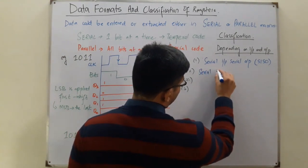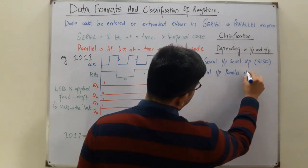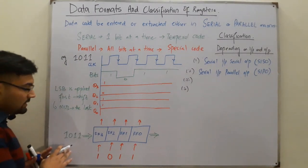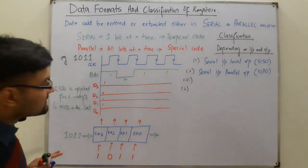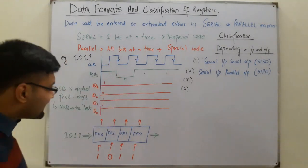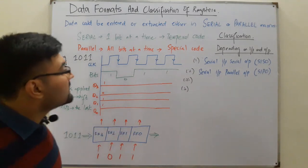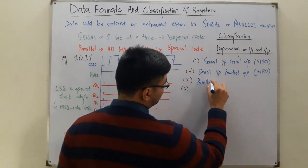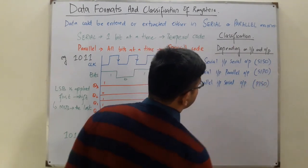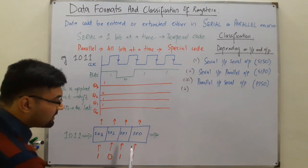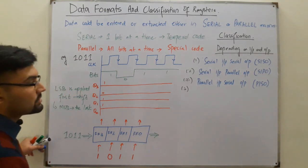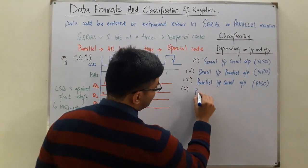The next is Serial Input Parallel Output, called SIPO. In this mode you apply the input one bit at a time, and at the output you extract all bits at the same time. The third is Parallel Input Serial Output, called PISO. In this mode you provide all inputs at the same time and get the output one bit at a time through the shifting method.